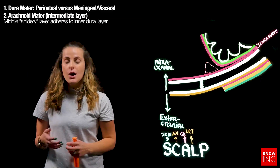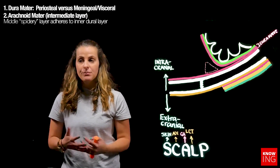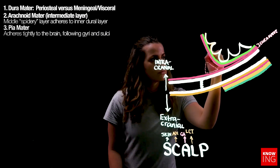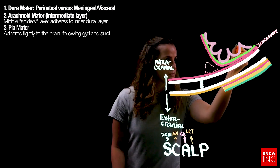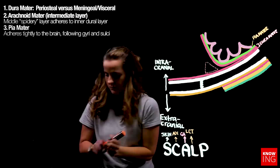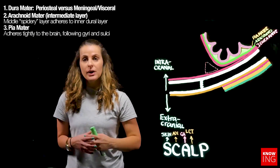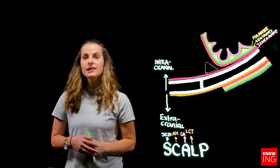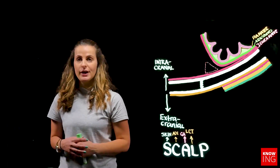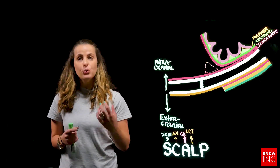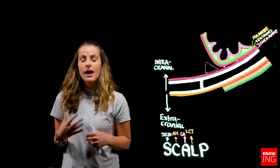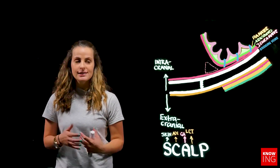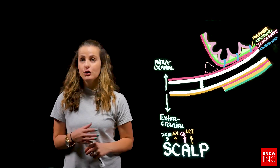The deepest meningeal layer is the pia mater, which attaches directly to the brain parenchyma. Within the subarachnoid space, shown in green, cerebrospinal fluid circulates around the brain. Venous drainage from the brain parenchyma drains back into the dural space via small veins referred to as bridging veins, as they bridge across the meningeal layers. This is an important concept when discussing hemorrhages.